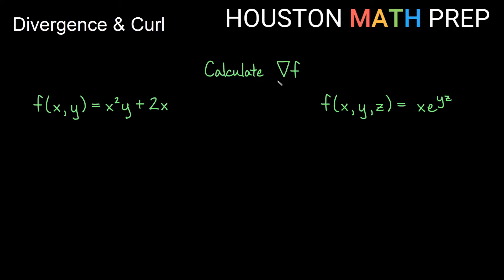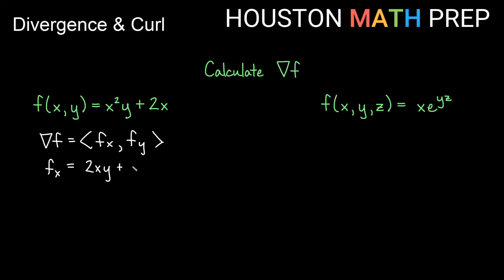Let's quickly calculate del f for a couple of examples. Here I have a function of x and y: f = x²y + 2x. This is a scalar function. So del f, for a function of x and y, is (partial fx, partial fy), giving us a vector field as output. Taking the partial derivative with respect to x gives 2xy + 2. Taking the partial derivative with respect to y gives x², since the last term has derivative 0 with respect to y. So our gradient del f = (2xy + 2, x²).